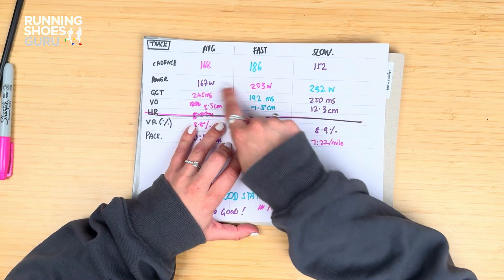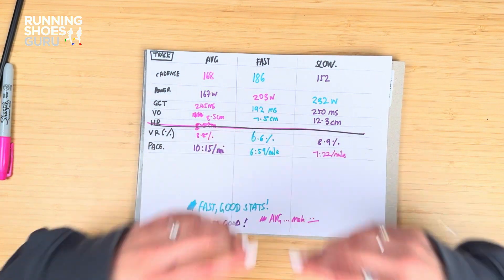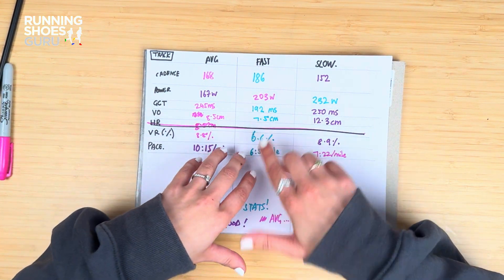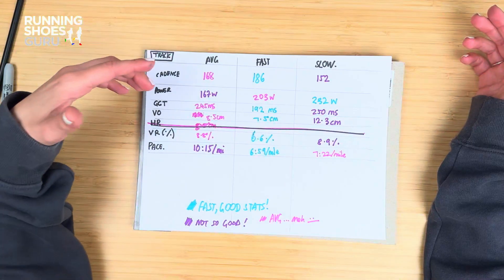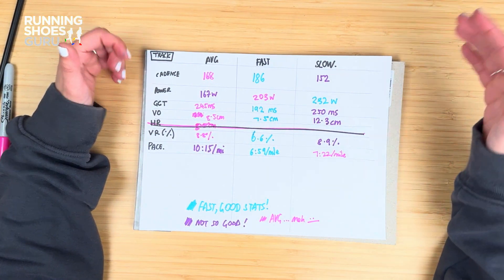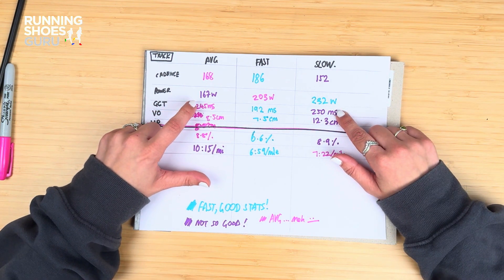The ground contact time — I've spent less time with my feet on the ground with the fast cadence: 192 milliseconds, compared to my average which is 245, which is a lot. And then you compare that to the slow — I'm bounding, and I'm absorbing perhaps too much on each stride. So I probably need to think about changing my stride. But this data is gold, it will help me out.